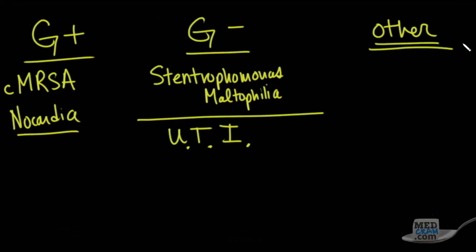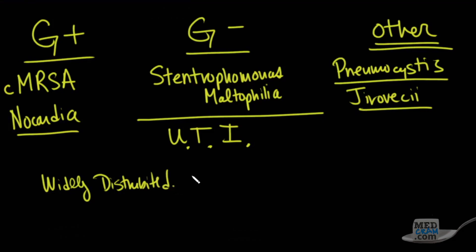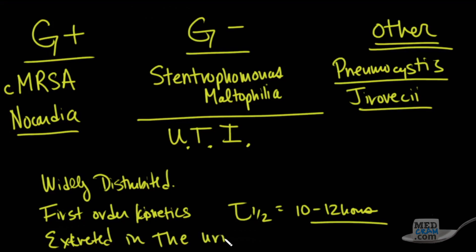Another important organism is Pneumocystis jirovecii, otherwise known as Pneumocystis carinii. In HIV or AIDS patients who have pneumocystis, this is really the treatment of choice. Unfortunately, it's in those HIV patients where you get the most complications from this medication. This antibiotic is widely distributed — it goes into the CSF, plasma, and urine. It follows first-order kinetics and the half-life is approximately 10 to 12 hours, so it is typically dosed at least twice a day. It is excreted in urine, which makes it so effective for the treatment of UTIs.